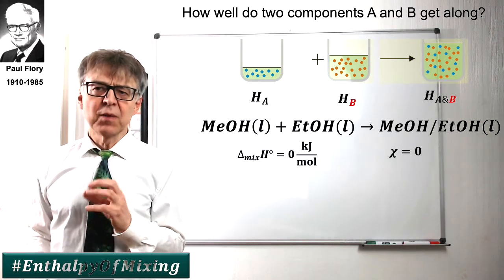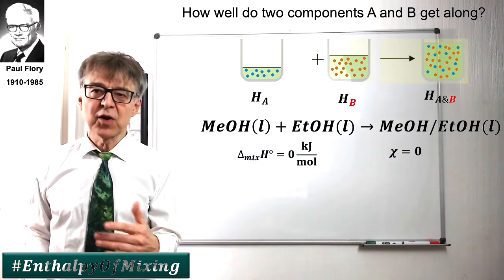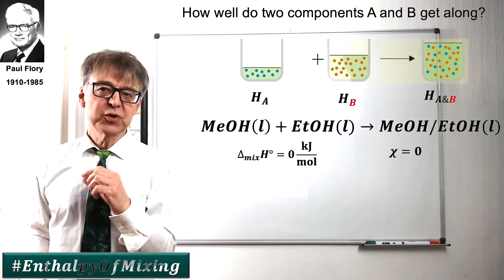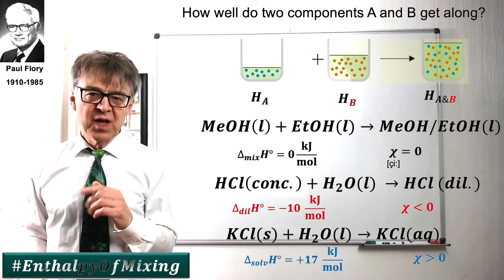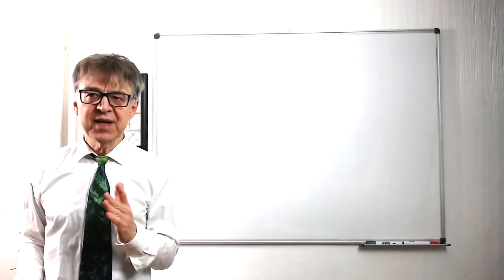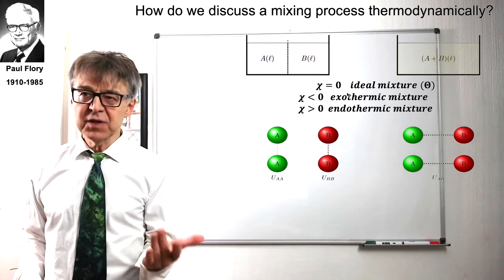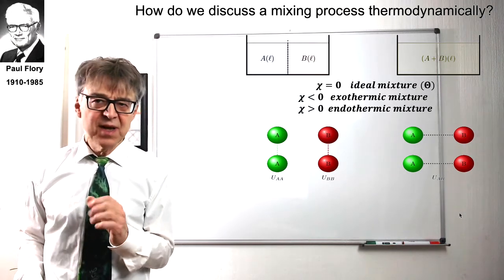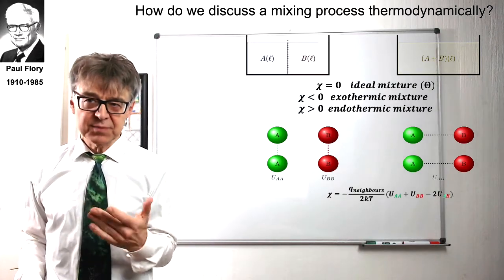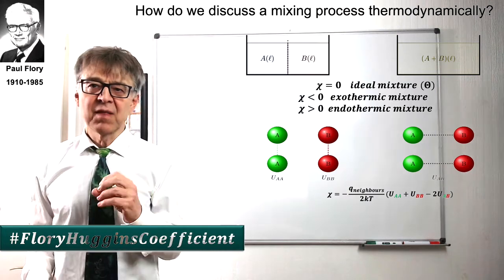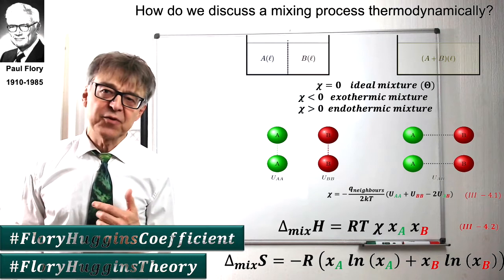However, if the two components are energetically appealing or unappealing, heat is released or heat is consumed when mixing. Non-ideal solutions may thus show a negative or positive Flory-Huggins coefficient. Flory-Huggins thermodynamically analyzes the mixture of two components. Depending on the magnitude of the intracomponent and the intercomponent interactions, the mixture is either ideal, exothermic or endothermic, expressed by the Flory-Huggins coefficient chi. The theory derives equations that can be used to calculate entropy, enthalpy and free energy of mixing.